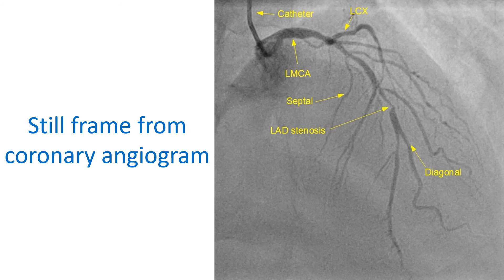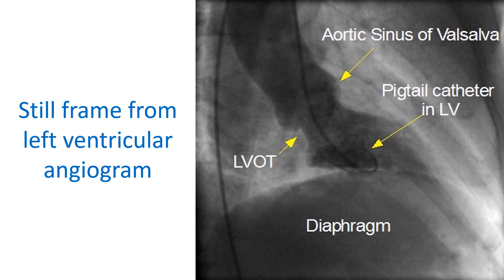Angiography is done by injecting radiocontrast medications into the blood vessels or chambers and taking continuous x-ray imaging, known as CINE runs. One of the commonest forms of angiography is coronary angiography, the visualization of blood vessels of the heart. This is used to detect blocks in the blood vessels and to assess their location and severity. Visualization of the lower chambers of the heart by injecting radiocontrast medication is known as ventriculography. Angiogram of the aorta is known as an aortogram, and blood vessels of the lungs are seen on pulmonary angiogram.